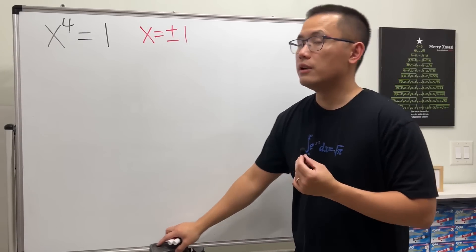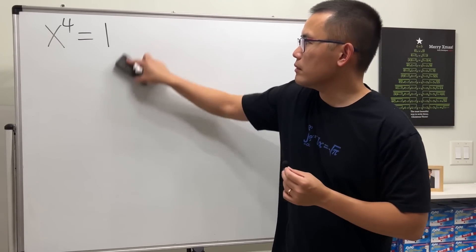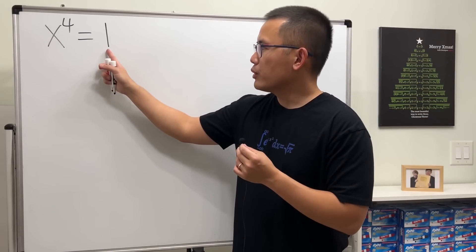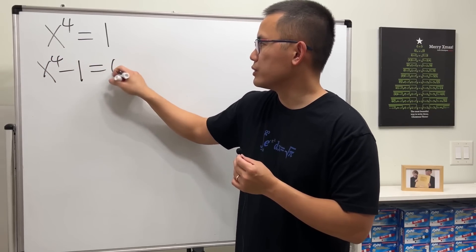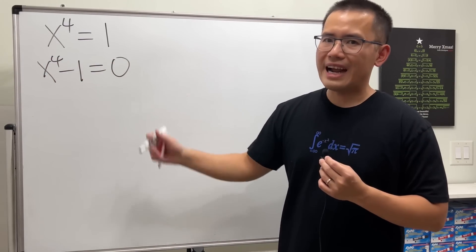So now, let's see how we can actually find out all the solutions. The first thing is, I'm going to move the 1 to the other side, and we get x to the fourth minus 1 equal to 0. And then I'm going to factor this.